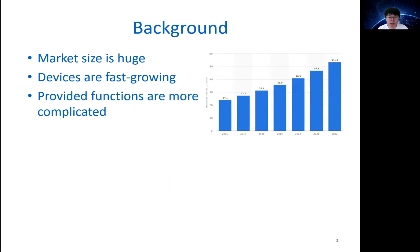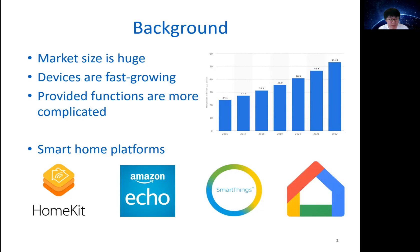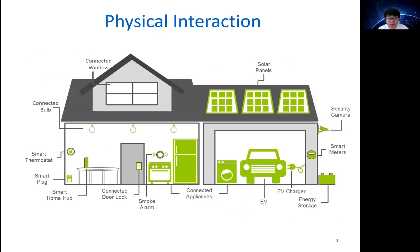The smart home plays a very important role in the IoT domain. The market size is huge and growing fast, and there are already multiple platforms provided by big companies. Here is a typical smart home environment. As you can see, there are many smart devices like Wi-Fi bulb, smart thermostat, and connected window. All devices connect to a centralized hub, and those smart devices can communicate through the hub using traditional wireless networks such as Wi-Fi or Bluetooth.